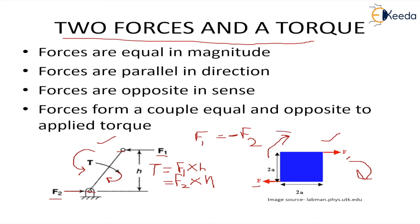If this torque is not equal to the couple, if the value of torque is more than the couple, the body will overturn in this direction and vice versa.